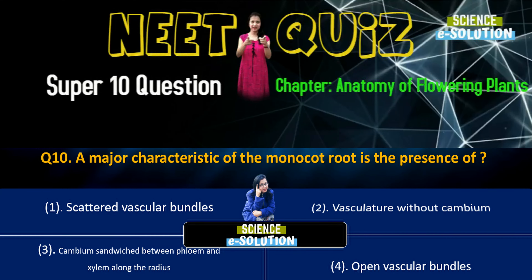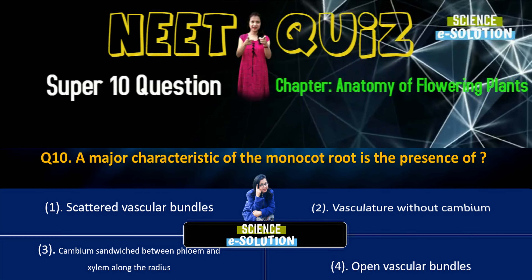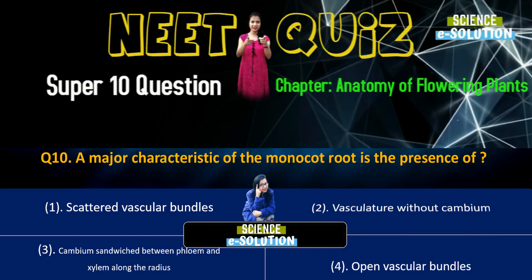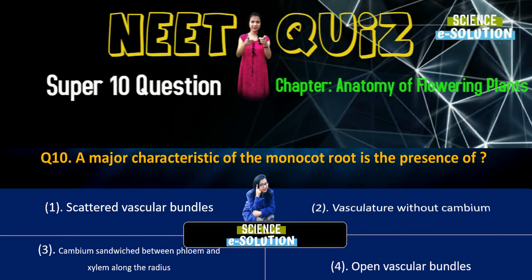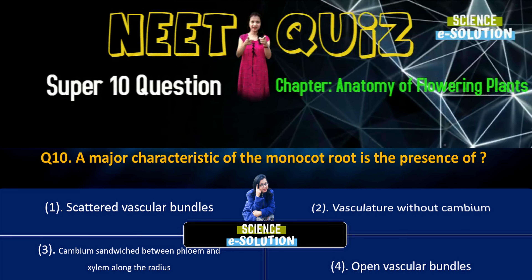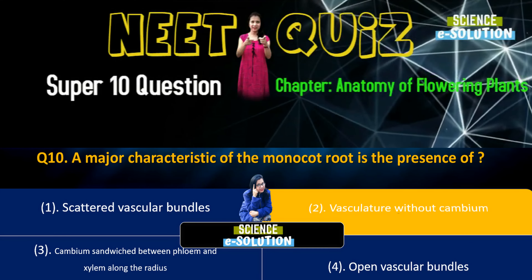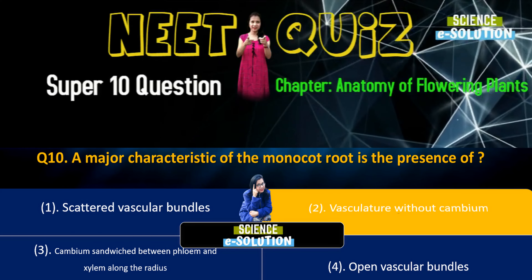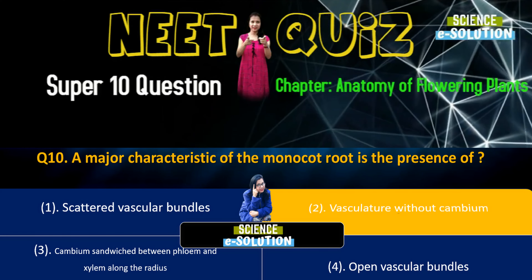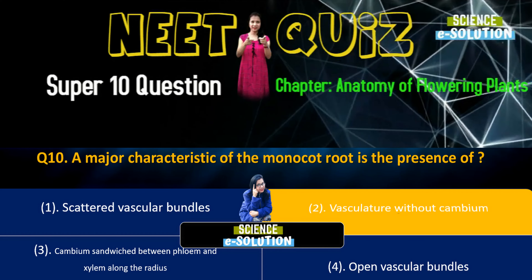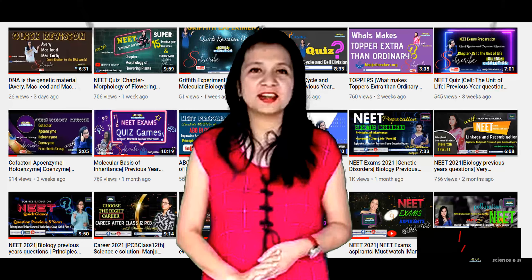Question number eight: Phloem in gymnosperms lacks — albuminous cells and sieve cells, sieve tubes only, companion cells only, or both sieve tubes and companion cells? Option number four.